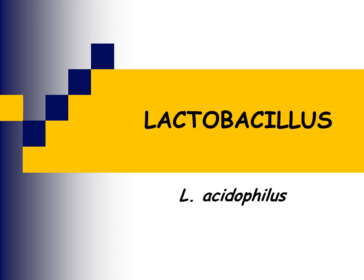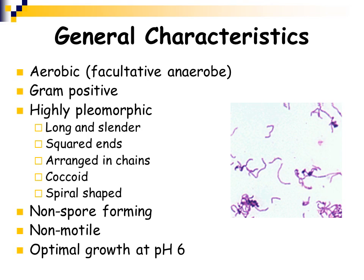We're going to move on now to Lactobacillus. There is only one species we need to worry about, and that is Lactobacillus acidophilus. It is a facultative organism — non-fussy — aerobic, gram-positive, and highly pleomorphic. It can be really long like spaghetti, very thin, sometimes with squared ends, forming long rod chains, having a coccoid look, or forming spiral-type shapes. It is a non-sporeformer and non-motile. Listeria is motile; Erysipelothrix and Lactobacillus are not. Optimal growth is at a pH of 6.